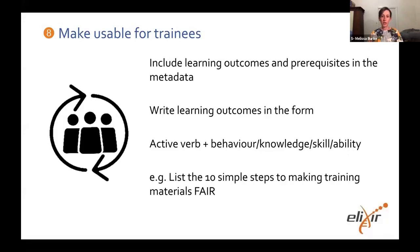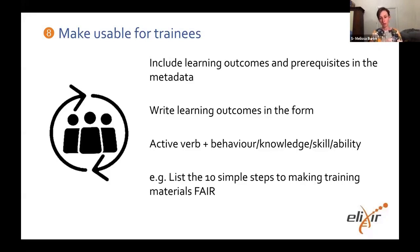What's being recommended in the training sphere and in the education world is to use the format of an active verb — ideally from Bloom's taxonomy — plus a behaviour, knowledge, skill, or ability. For example, if we were to apply that to this presentation, we'd say: 'By the end of this presentation, you should be able to list' — which is your verb — 'the 10 simple steps to making training materials FAIR' — which is the knowledge part of that equation.